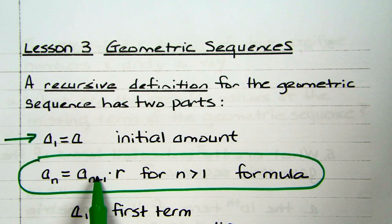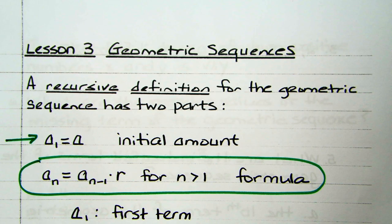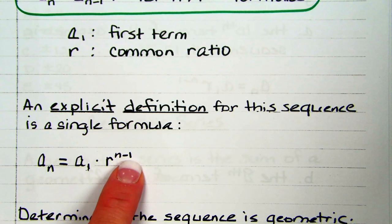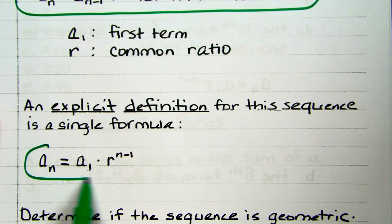If you think about it, the recursive formula does look very much like A times B to the X power. Then the explicit formula is A sub N — the nth term — equals the first term times R to the N minus 1, which again looks a lot like our exponential.